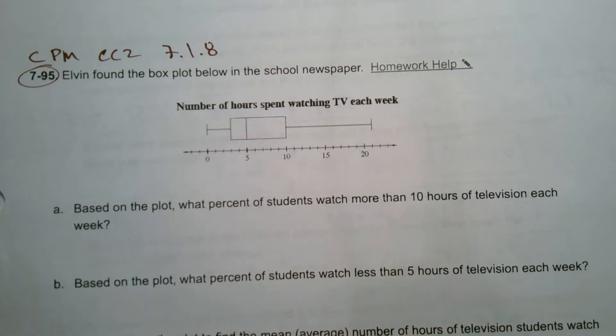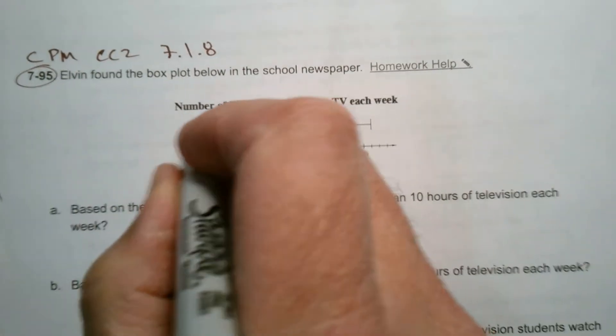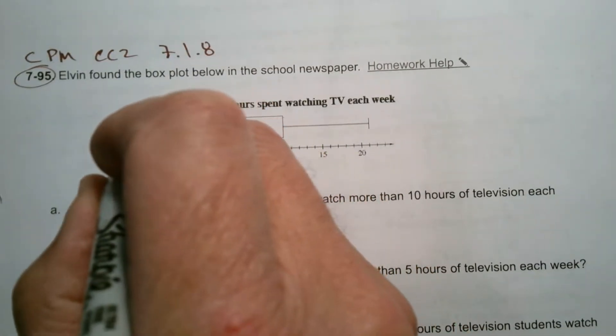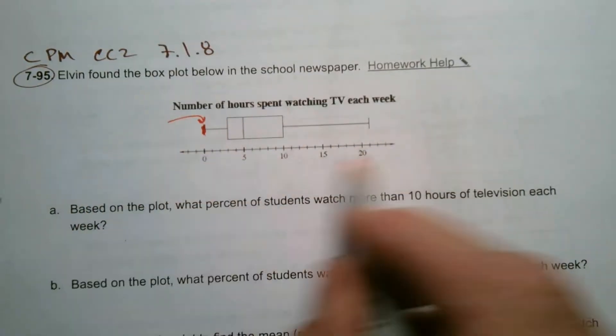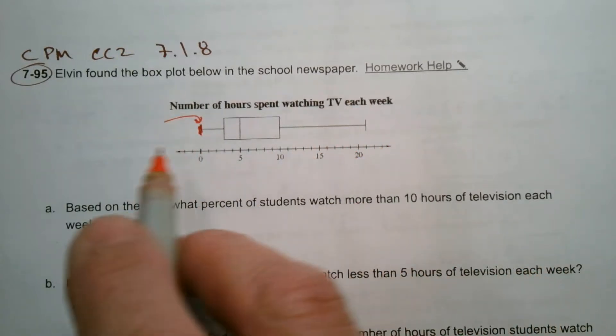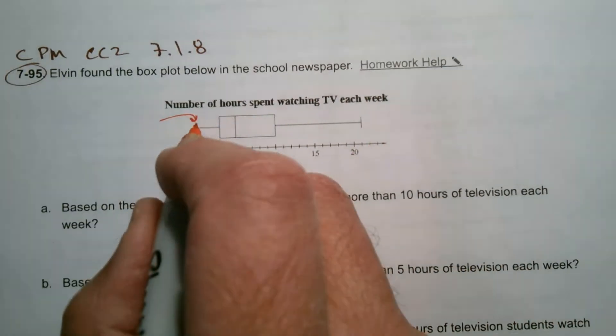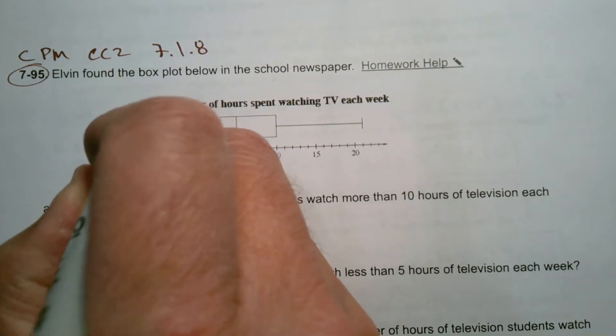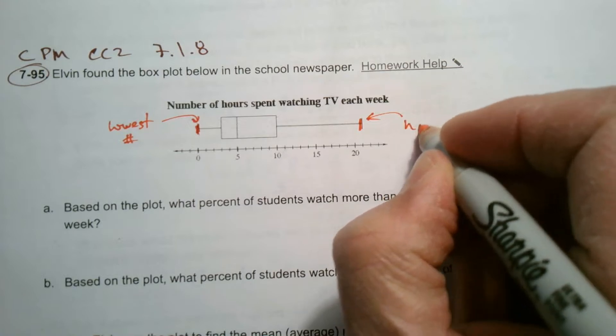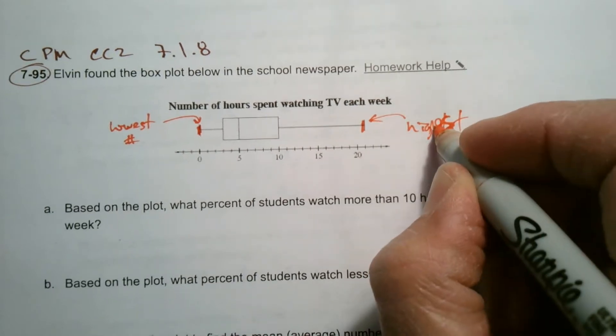So just to remind you about things about the box plot before we even answer these questions, some of the things you got to know. Let me back up here. So box plots really come from a list of data, graphing a list of data, right? So you would have data in consecutive order in order to then determine what this box plot is. So this number is always your lowest number. That there represents your highest number.